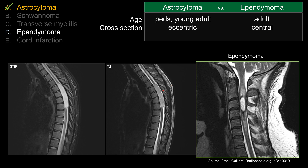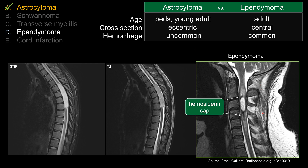In reality, when they get this big, they tend to occupy nearly the entire cord, so they all look kind of central in location. Hemorrhage is fairly common for ependymoma — it's one of those lesions that can show a hemorrhagic component, whereas it's relatively uncommon for astrocytoma. Therefore, if I see evidence of prior hemorrhage, you can see this so-called hypointensity around the tumor — the hemosiderin cap sign — I would favor ependymoma. However, the hemosiderin cap sign is not pathognomonic for ependymoma; any cord lesion that can bleed, such as hemangioblastoma, can also show it.